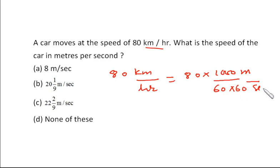So it is 800 by 36, or we can say 200 by 9 meters per second. Okay, so it is 22 and 2 by 9. Our friends, if you can memorize, if you wish to convert kilometer per hour to meter per second directly, you can multiply by 5 by 18.